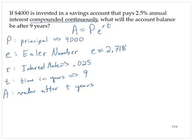So with the information we have in this problem, we would have A equals 4000 times E to the 0.025 times 9.